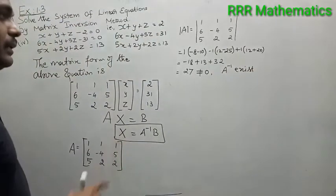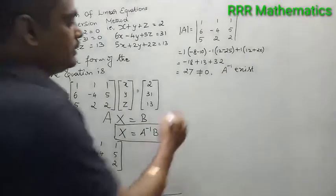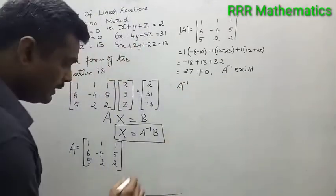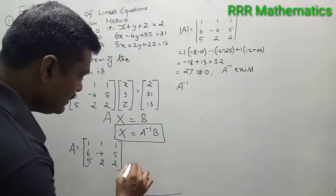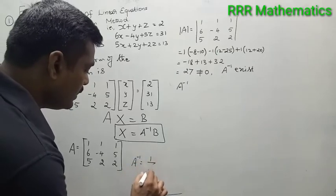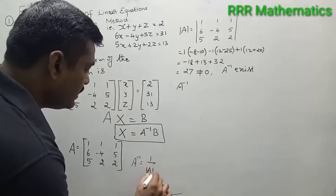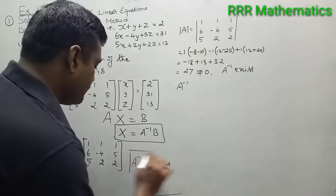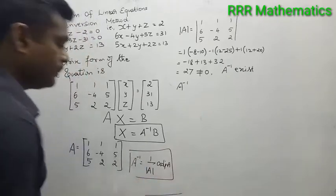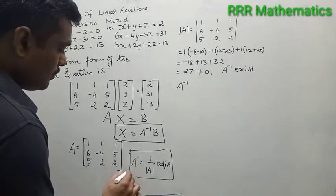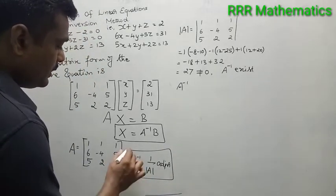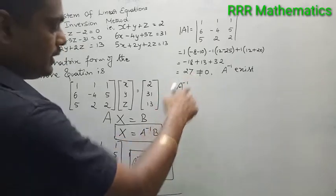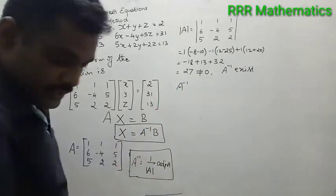You want to find A inverse. The formula is: A inverse equal to 1 by determinant A into adjoint A. The determinant A I got is 27. Now find adjoint A.